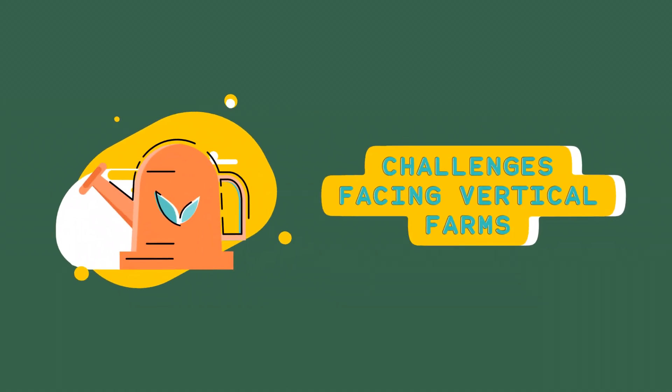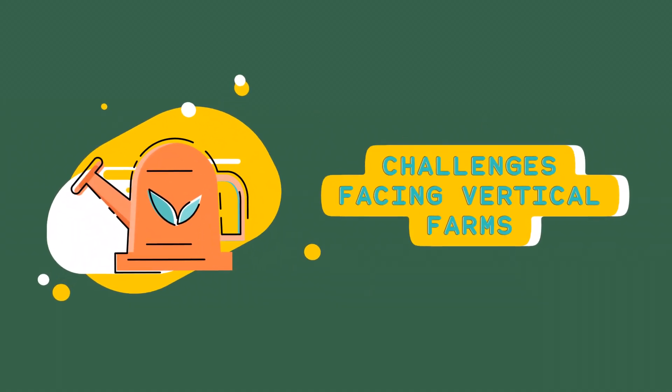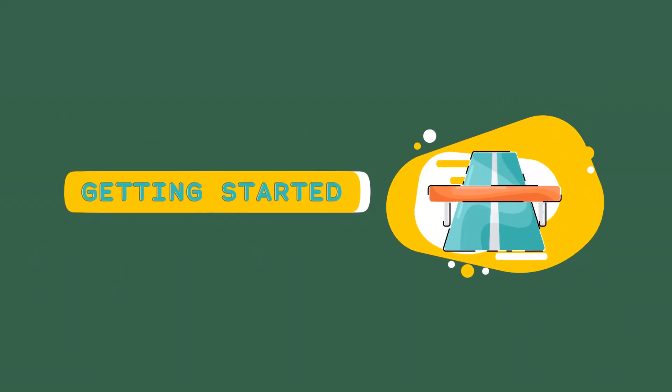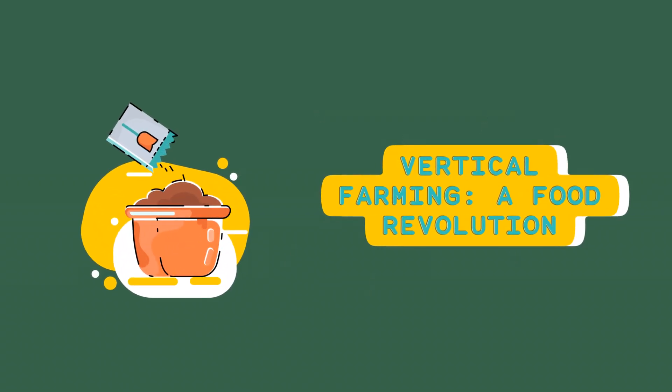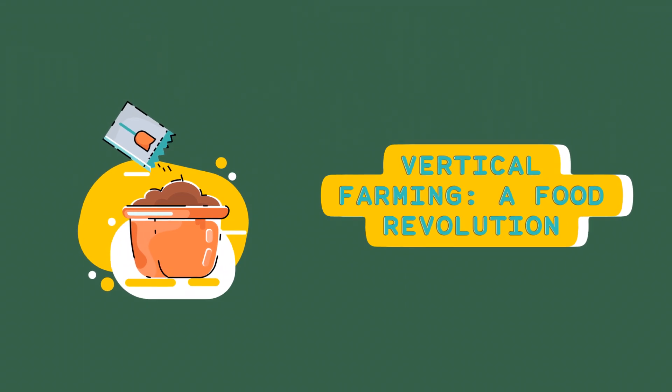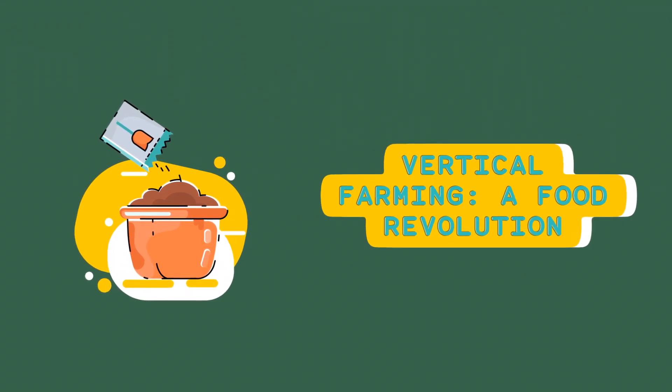Discussion. Why vertical farms keep failing around the world. Vertical farming, the practice of growing crops in stacked layers, has garnered significant attention as a potential solution to global food challenges.